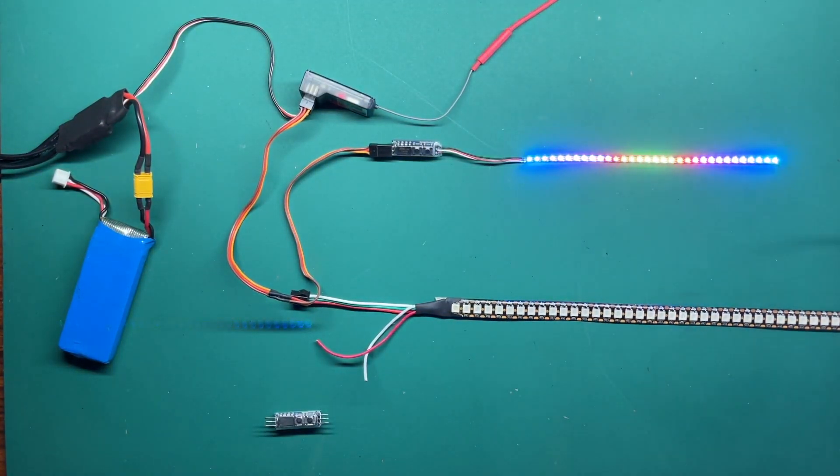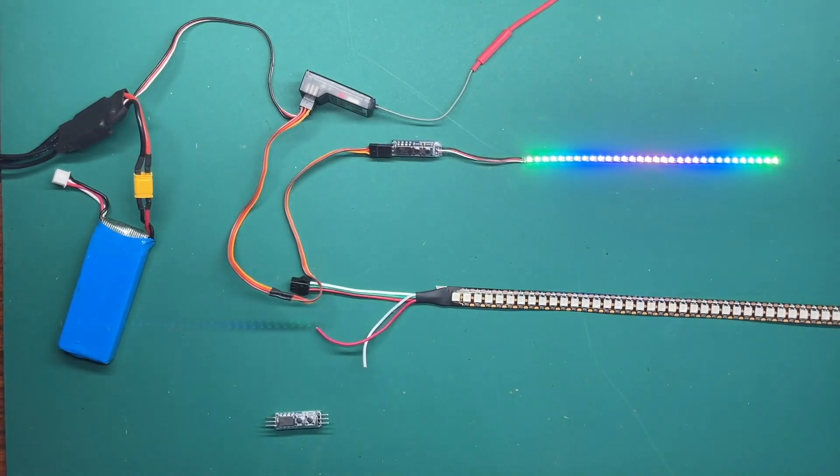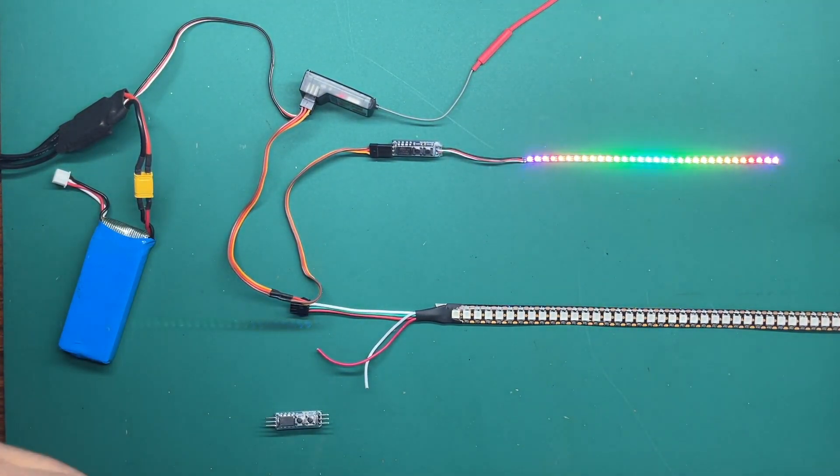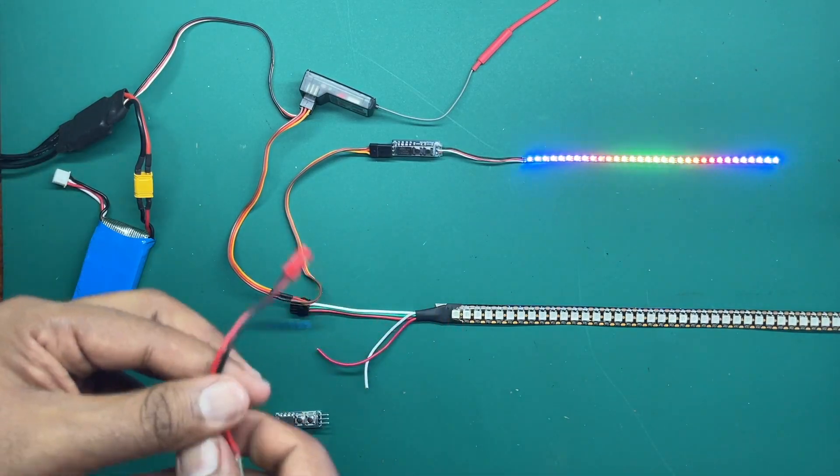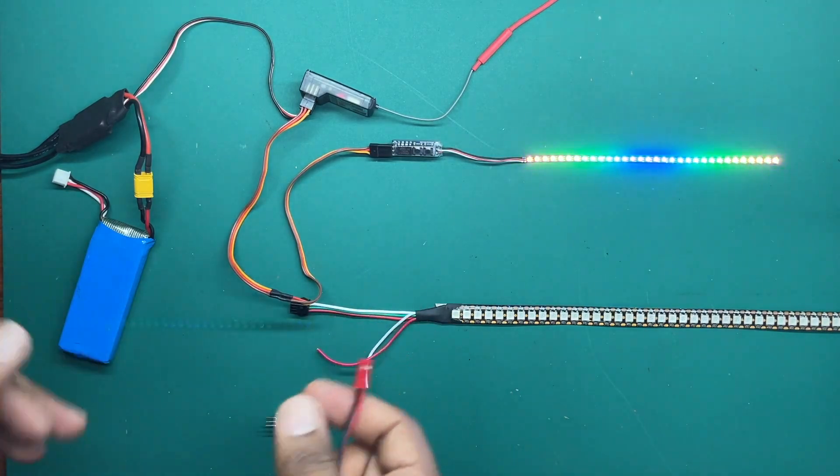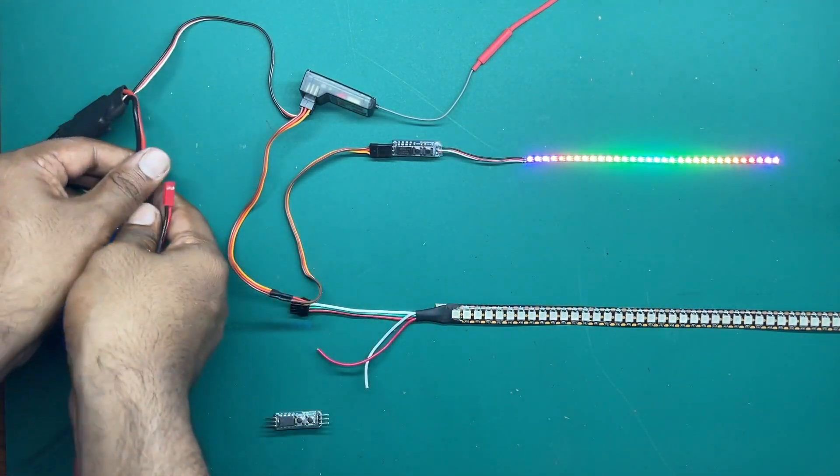So this is basically it. Let me turn on the lights so you can see better. As I mentioned, if you are not using the remote control you can use a normal five volt power supply and use push buttons to change the patterns.